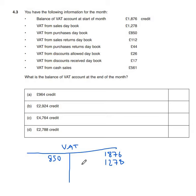VAT from the sales returns day book: because we haven't sold as much, we don't owe HMRC as much as we thought, so that goes on the debit side — 112 pounds — offsetting the amount owed from the sales day book. VAT from purchases returns is 44 pounds; because we can't claim back the full 850, the 44 pounds goes on the credit side to reduce the amount we can claim back.